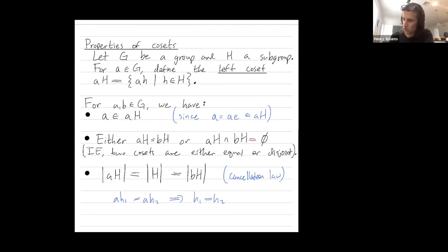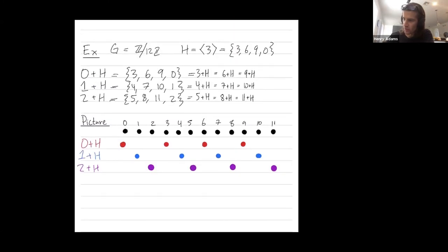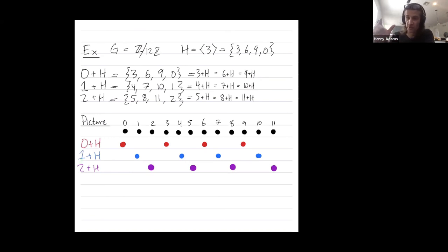Let me show you a picture of this. Our subgroup H had size four. When you translate the subgroup — say by adding one — you still get a coset of size four, with no overlaps. Another way of saying this is that when you apply element a on the left, the map from the subgroup onto a coset is injective, or one-to-one.